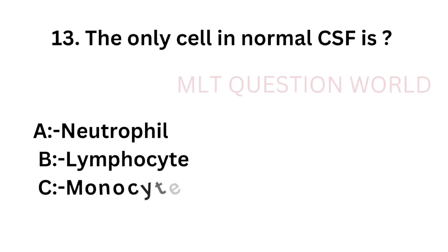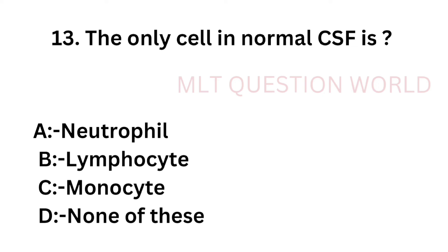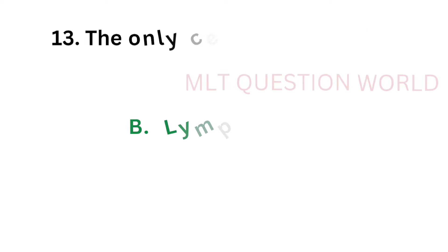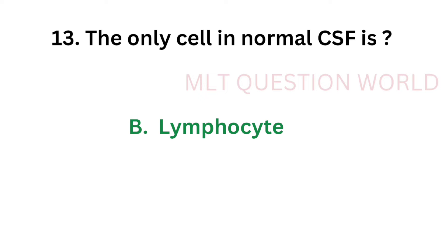Question number 13: The only cell in normal CSF is — option A: Neutrophil, option B: Lymphocyte, option C: Monocyte, option D: None of these. Which of the following cells is normally present in cerebrospinal fluid? The correct answer is option B, Lymphocyte. The only cell in normal CSF is lymphocyte.